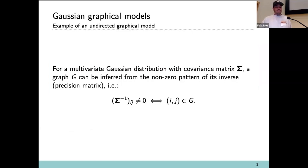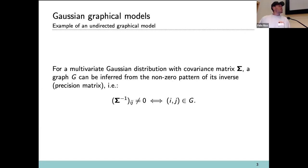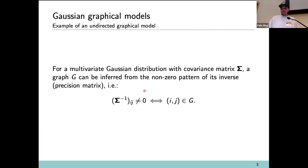One way graphical models arise: if you have a Gaussian distribution, you can get a more informative graphical model. You take the covariance matrix, invert it to get the precision matrix, and whenever you have a non-zero element in the precision matrix, you create an edge in the graph. Then the distribution will be Markov with respect to that graph. That's how we can find a graphical model if you know the distribution is normal.